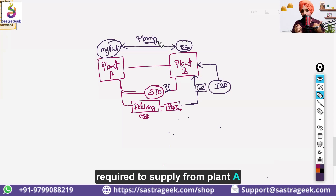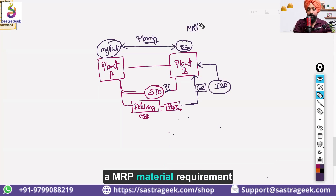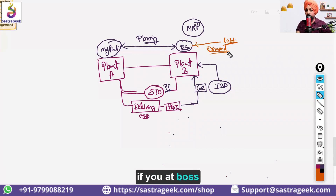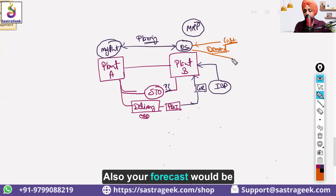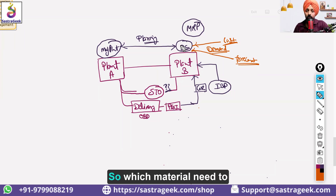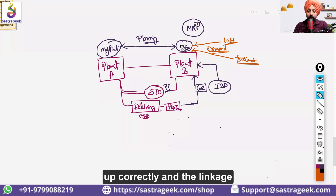Based on demand, the system calculates missing quantities that need to be supplied from plant A, and a Stock Transfer Request is created. This calculation is known as MRP — Material Requirement Planning. The customer places demand at the distribution center, or for make-to-stock scenarios, a forecast is done at the DC level. Since a DC may receive materials from five different plants, MRP determines which material comes from which plant, in what quantity.